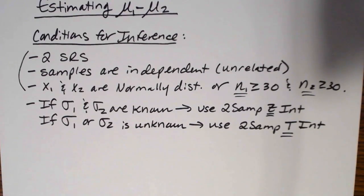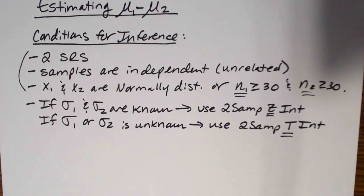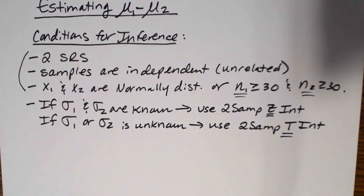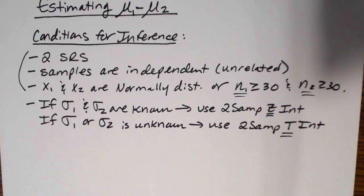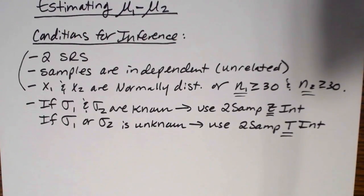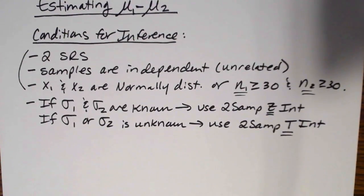You're welcome to look at the by-hand formula for doing this kind of computation, but for the most part we'll just be doing this in the calculator using either 2-samp Z or 2-samp T. The interpretation piece is a bit more complicated, so that's really what I want to spend a lot of time on in this video.